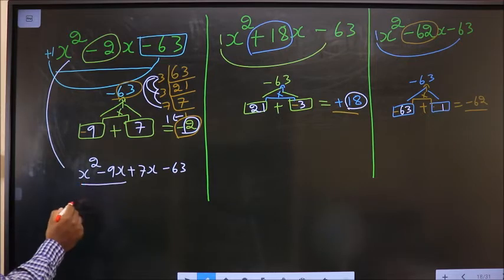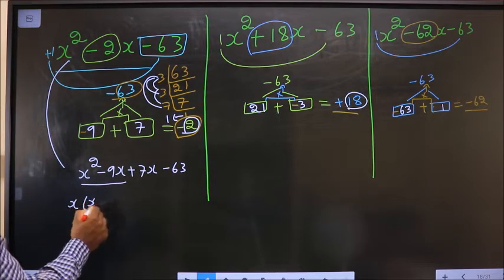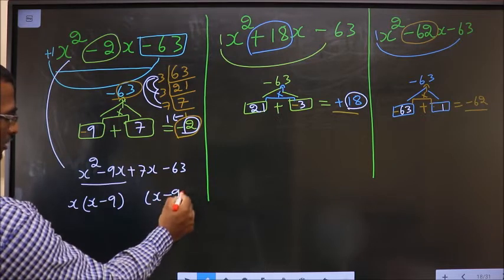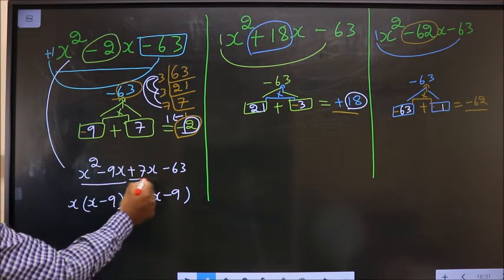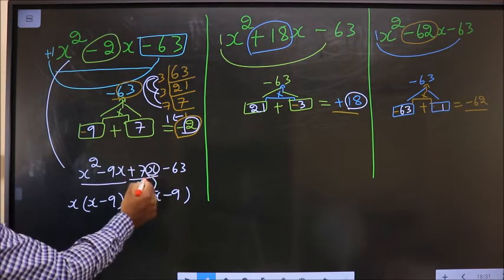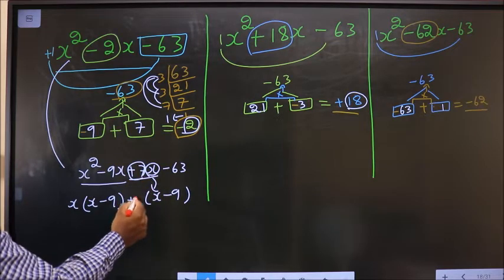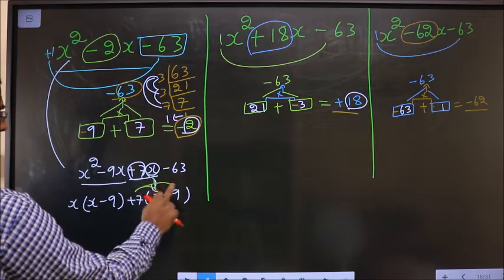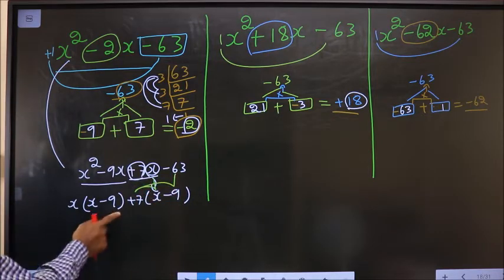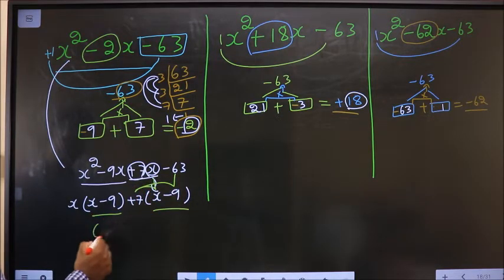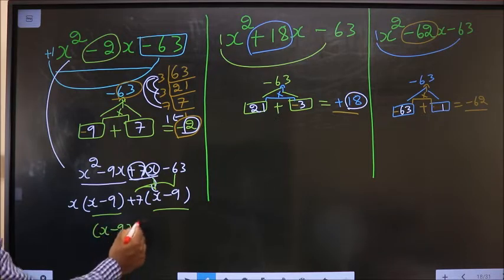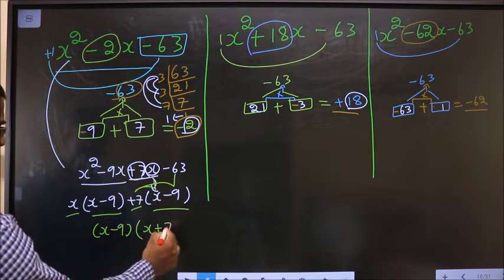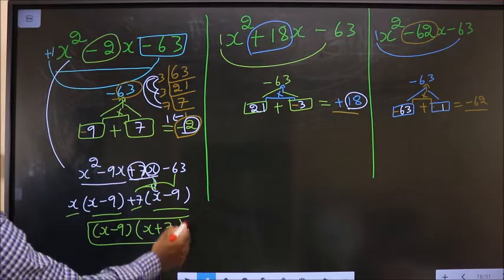What can I take common from the first two terms? x — giving x(x - 9). From the last two terms: 7x - 63, taking x minus 9 common gives plus 7. Now take x minus 9 common, leaving x and plus 7. So the factorized answer is (x - 9)(x + 7).